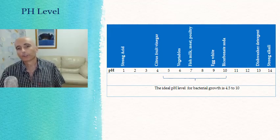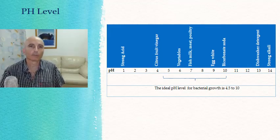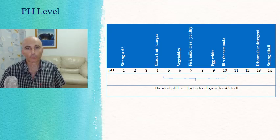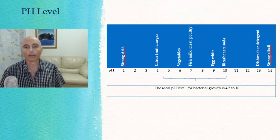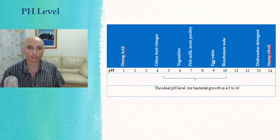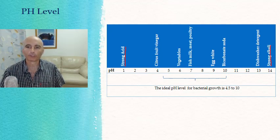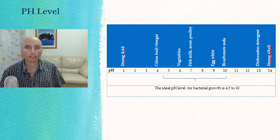The first we're going to look at is pH level. pH level actually refers to how strong an acid or alkali something is, and in the middle is where bacteria love to grow — between four and a half to ten. Citrus fruit sits at about a four as a strong acid, and dishwasher detergent is up at 13 as an alkali. So between four and a half and ten is the key range for good bacterial growth.